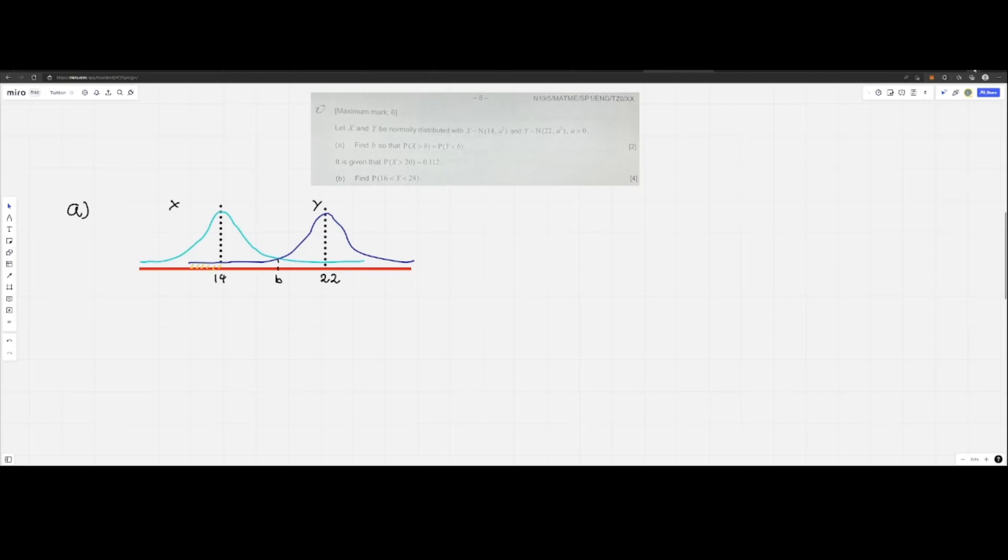This orange area, which is the probability of Y less than b, would be the same as the green area, which is the probability of X more than b. Since b is directly in the middle of 14 and 22, b becomes (14 + 22) / 2, which gives us 18.